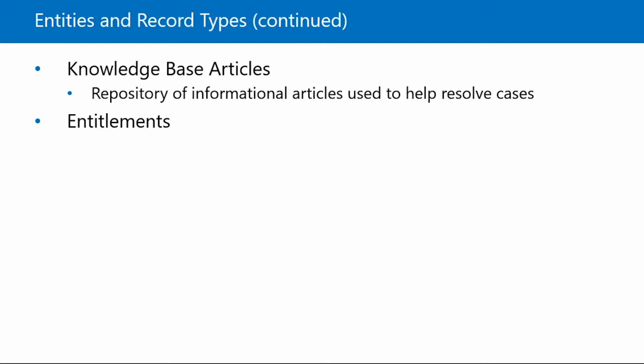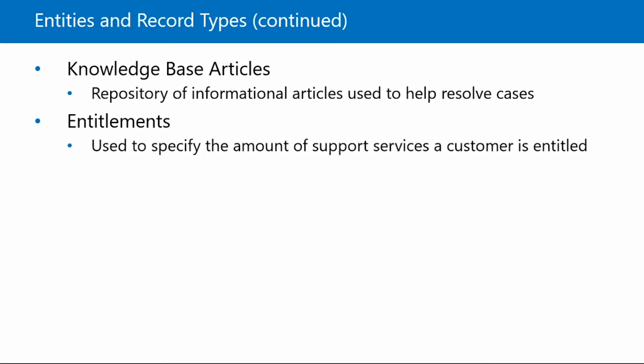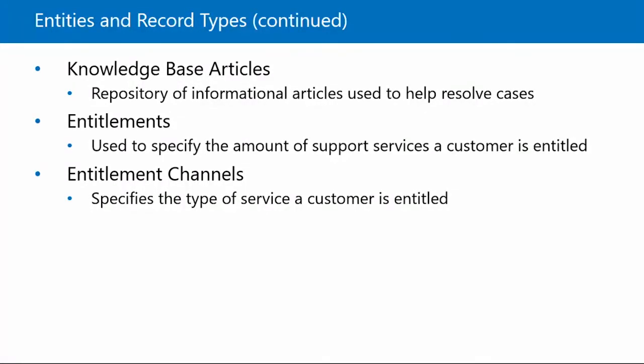Then there are also entitlements. Entitlements can be used to specify the amount of support cases for which a customer is entitled. For example, a customer's entitlement in Microsoft Dynamics 365 might allot ten support cases that they can use at their discretion. Once the customer uses all their allotments on the entitlement, they will no longer be able to associate any more cases with the entitlement. Associated to entitlements are entitlement channels. Entitlement channels specify the type of service a customer is entitled to. Some examples of entitlement channels are phone, email, web, or even Facebook. So a customer can have five entitlements through email and five entitlements through a web interface.